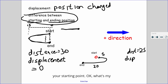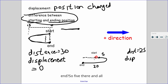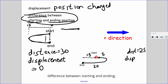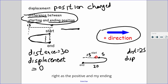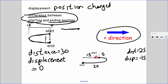Your ending position compared to your starting point: you went 5 to the right and then 20 to the left, so 20 minus 5 gives you 15. Displacement is the difference between start and end position — you started at origin O and ended 15 to the left. But we also consider direction: right is positive, and your ending point is to the left of the origin, which is opposite the positive direction, so your displacement is negative 15.